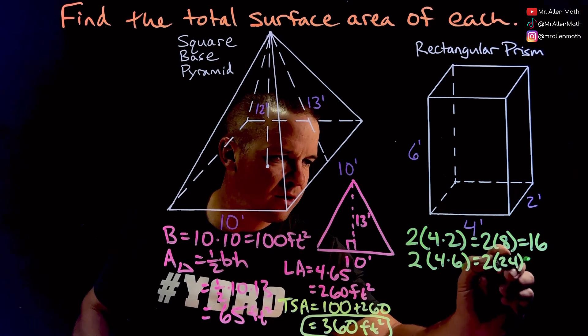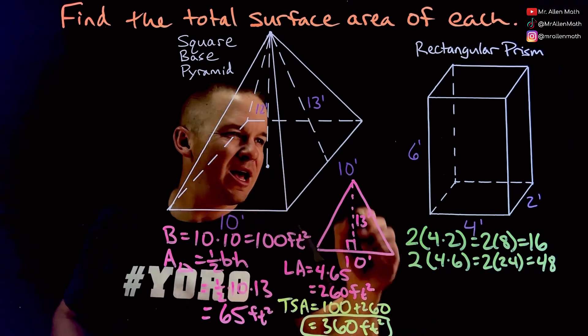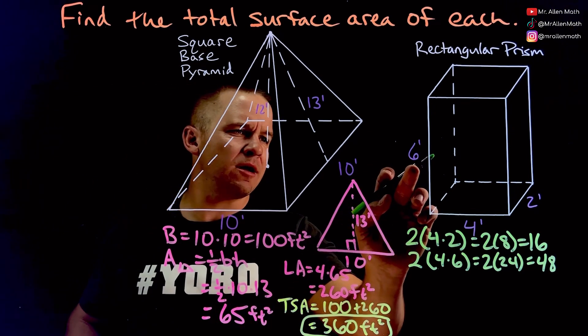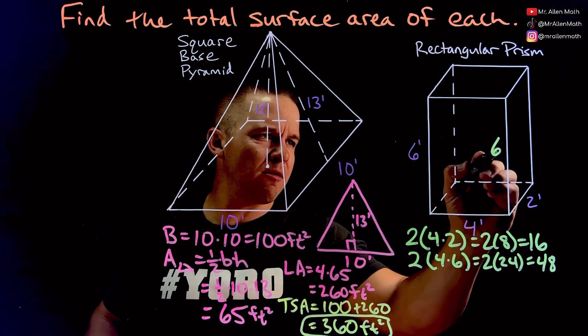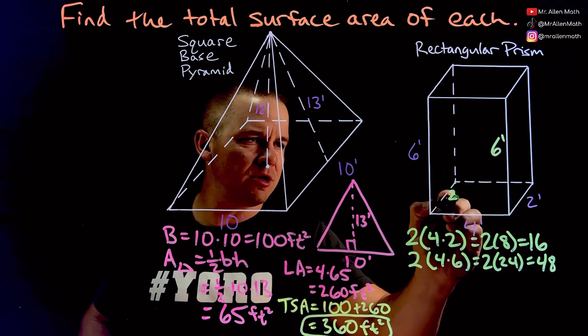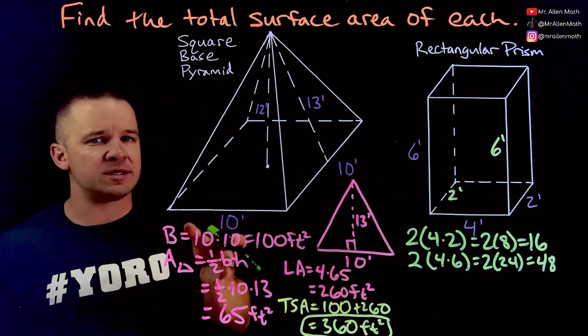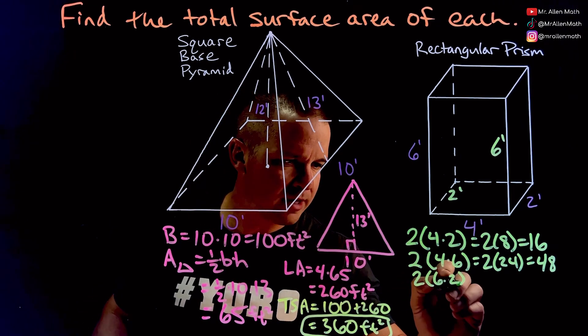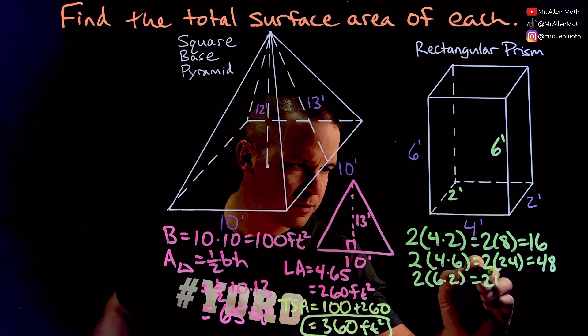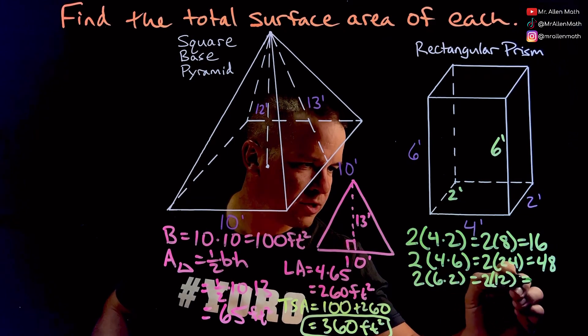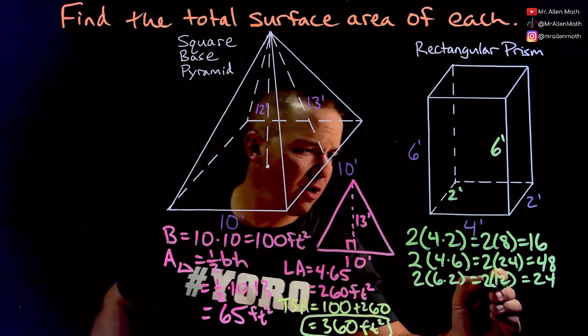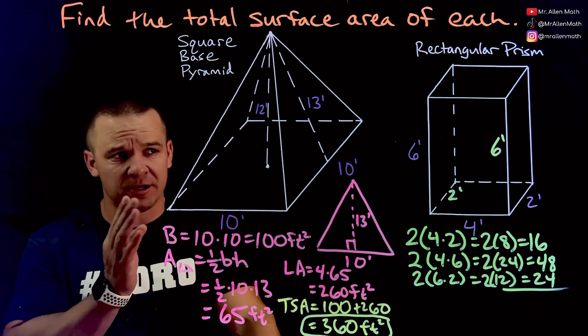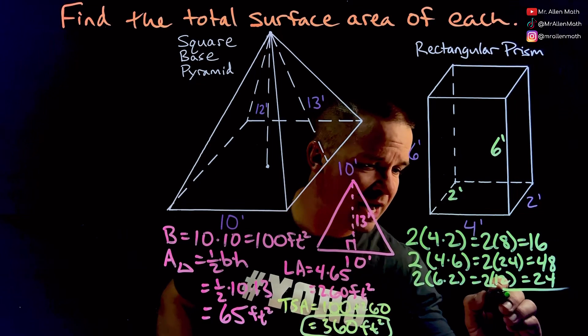And then the last one, hmm, what are the dimensions of that going to be? Well this six right here is the same as this guy right here, right, and same with the two, the two could be right here as well. In any event we can see that we have a six foot by two foot face as well. We got two of those, six by two, that's going to be two times 12, which is going to be 24. So we add these all up, 16 plus 24 is pretty easy right, that's going to be 40, plus 48 is going to be 88.